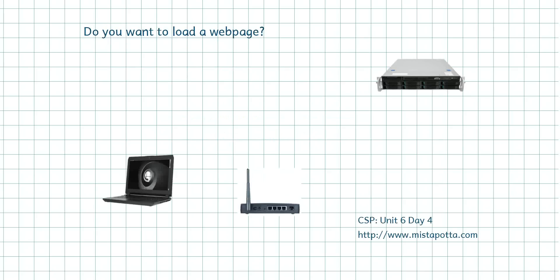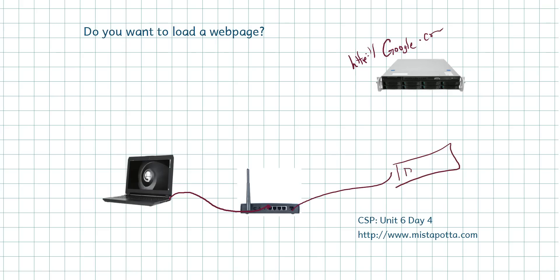I want to load a webpage, because over here this is Google. I'm going to go to http://google.com from my computer. My computer is connected to a router — a device that routes requests from computer to computer through the network. I would type in my address, and it's going to find a DNS server somewhere out in the internet, and it's going to transform google.com to the IP address for Google, which is 74.125.224.72.